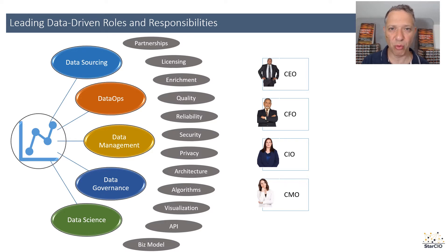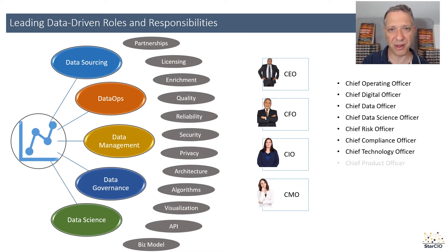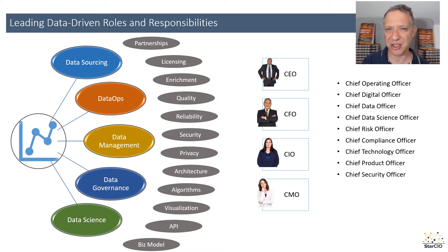Often a CISO is working with this group in terms of security. And then we have the CMO in terms of looking at customers and products and prospects and managing a pipeline around this. Now, depending on your organization, you're also going to have a number of other C-suite or C-level responsibilities, starting with the chief operating officer going all the way down to the chief security officer and a number of other responsibilities in between.